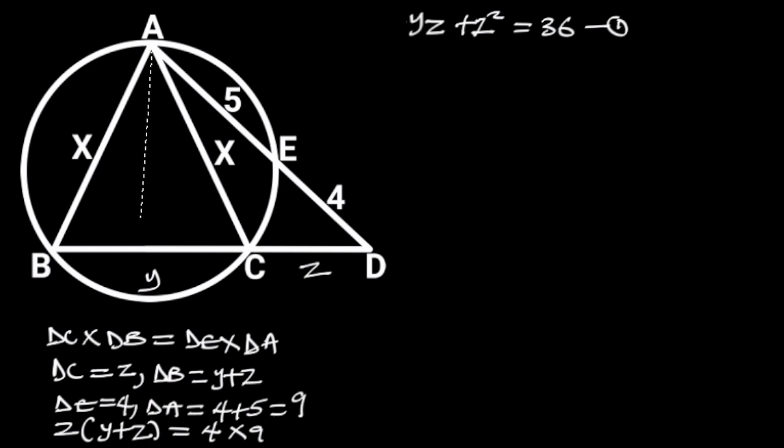Next, let's draw a perpendicular line from A to BC. Let the point of intersection be M. Observe that triangle ABC is an isosceles triangle, since AB is equal to AC. If that is the case, it follows that BM is equal to MC. Since we have already taken BC as Y, it follows that BM is equal to Y over 2 and MC is equal to Y over 2.